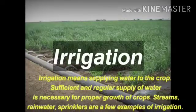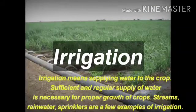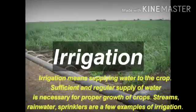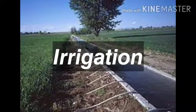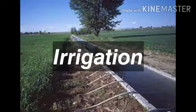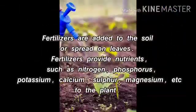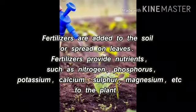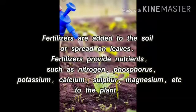What is irrigation? Irrigation means providing proper water to the crops — supplying a proper amount of water to the crops. Sufficient and regular supply of water is necessary for the growth of crops. We have to take care that the seeds do not get washed off due to excessive irrigation. The seeds also need proper fertilizers. Fertilizers are added to the soil and even sprayed on the leaves. Fertilizers provide nutrients such as nitrogen, phosphorus, potassium, calcium, etc. to the plants.